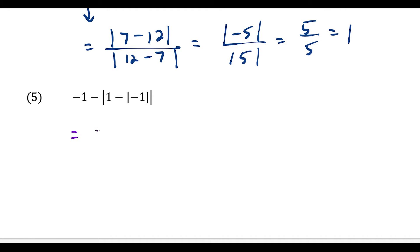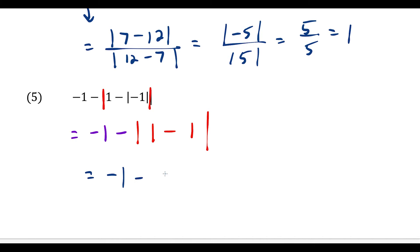Question five has a bit going on: we have negative one minus the absolute value of one minus the absolute value of negative one. The absolute value of negative one is one, so this becomes negative one minus the absolute value of one minus one, which is the absolute value of zero. Then we have negative one minus zero, which is negative one.